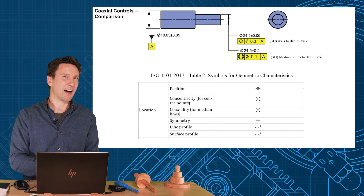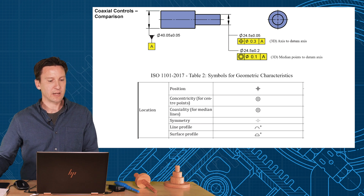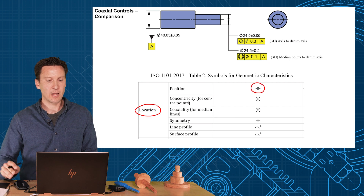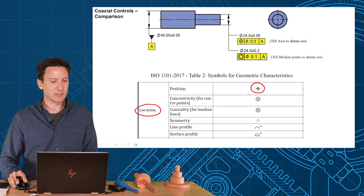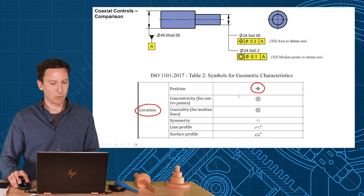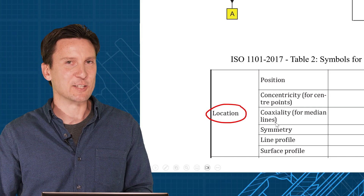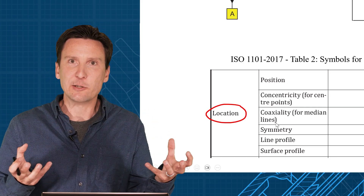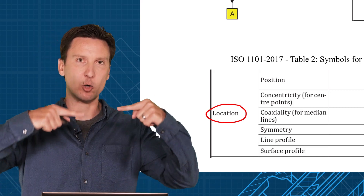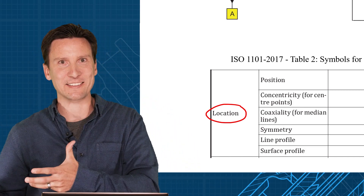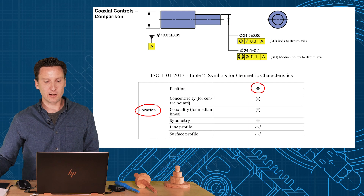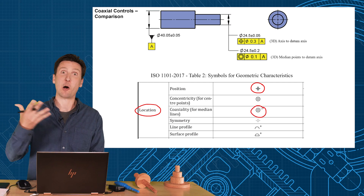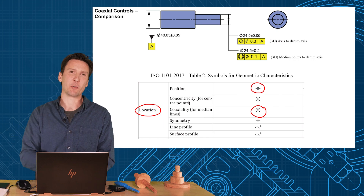I also want to talk about how the ISO standards handle this. They have two symbols for location tolerance: the position symbol and what we might call concentricity. But they actually separate the concepts — concentricity is for center points, while coaxiality is for median lines. So if you have concentric spheres, it's called concentricity. But if you have coaxial shafts, they call it coaxial. If you're using ISO standards, they do use this symbol a lot, but they still call it coaxial, which is really what position does.